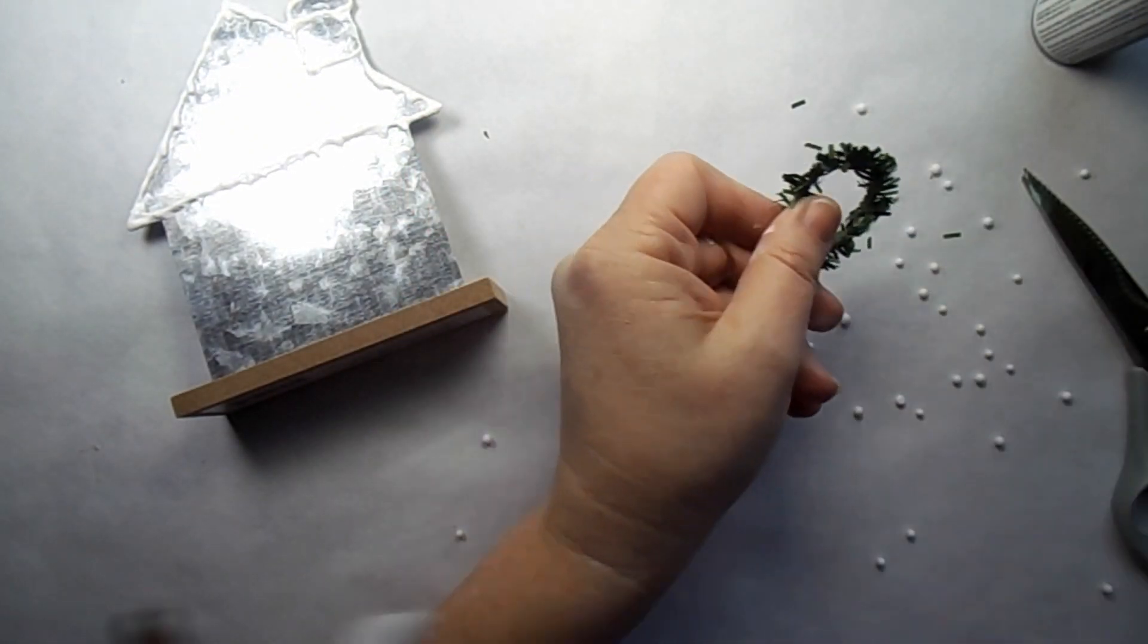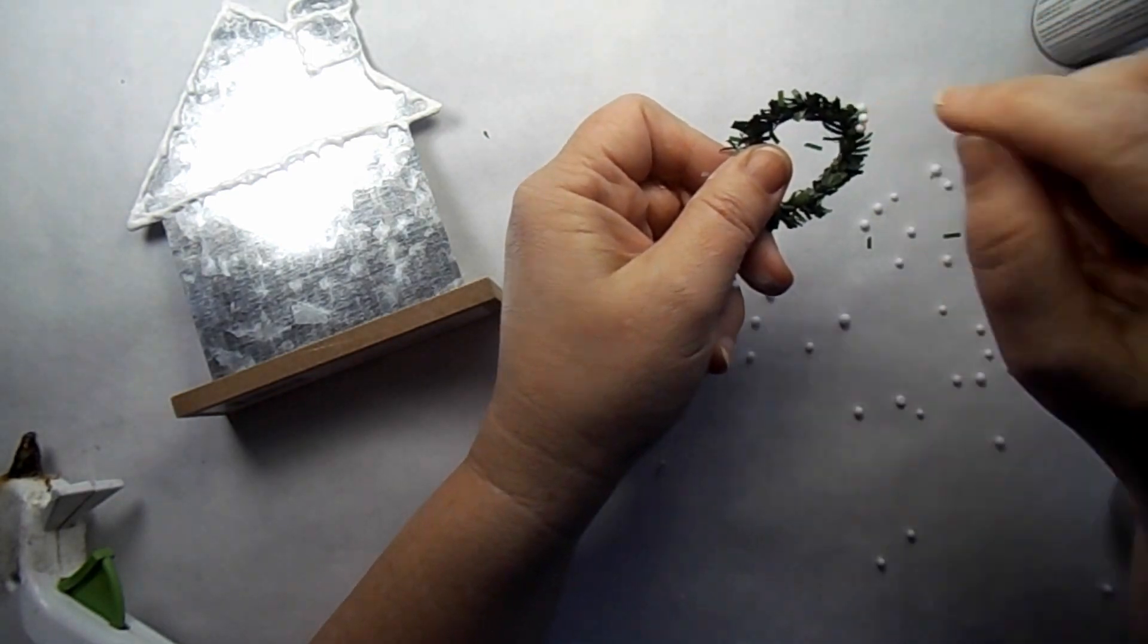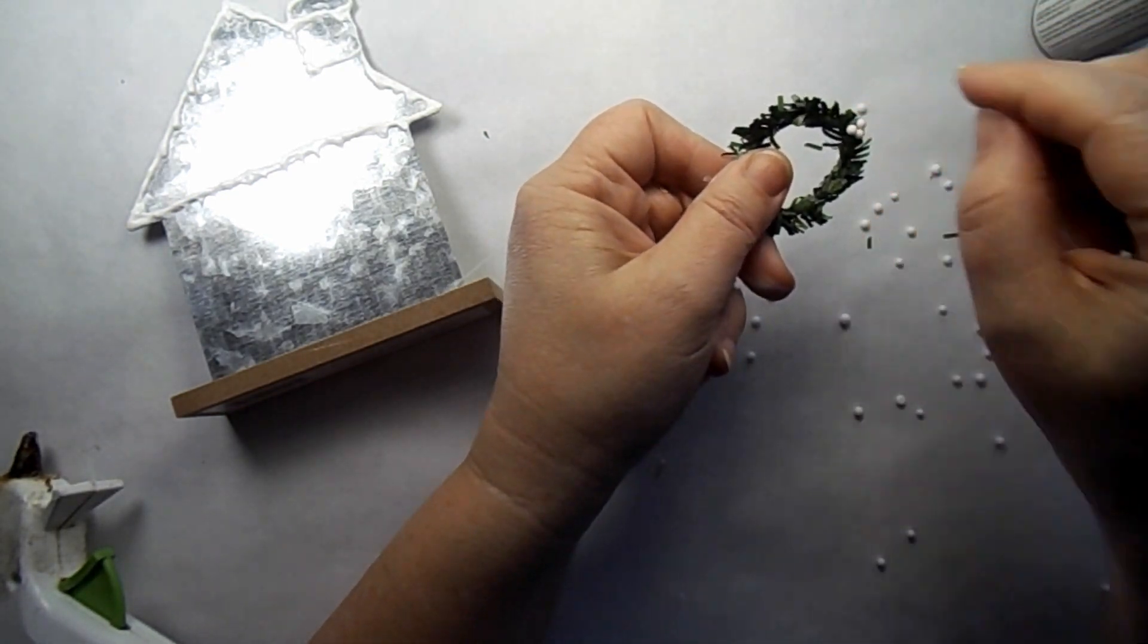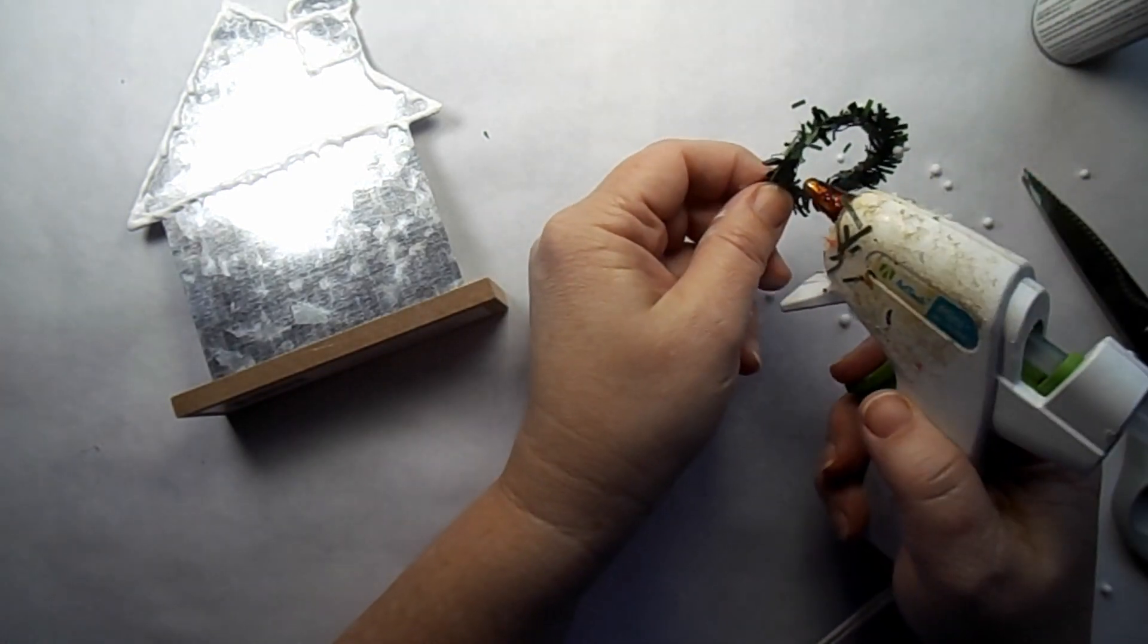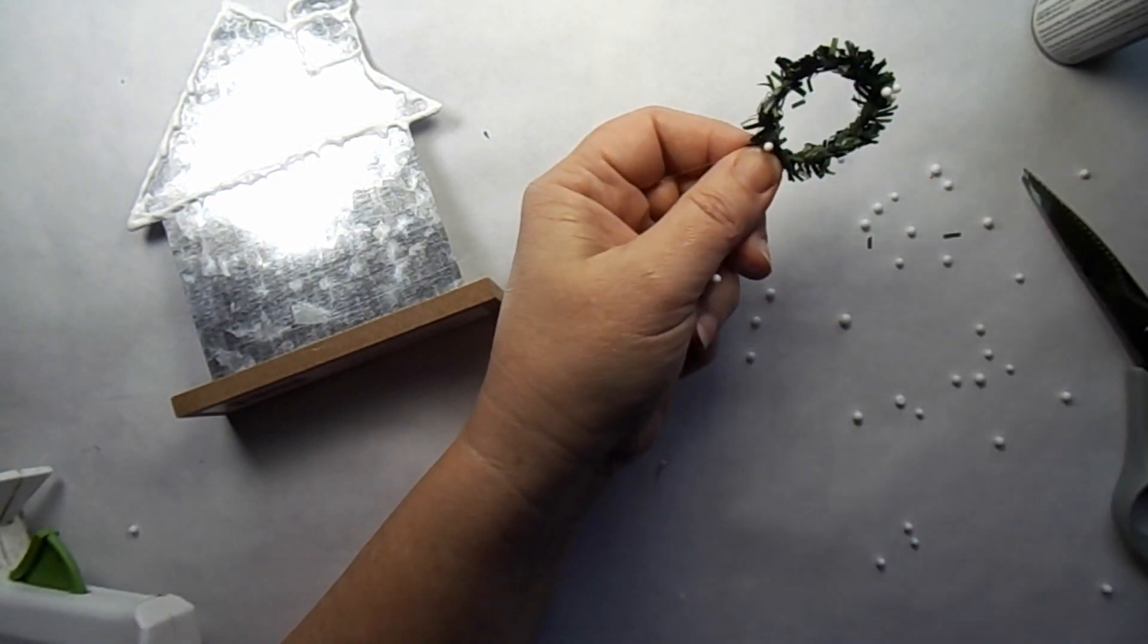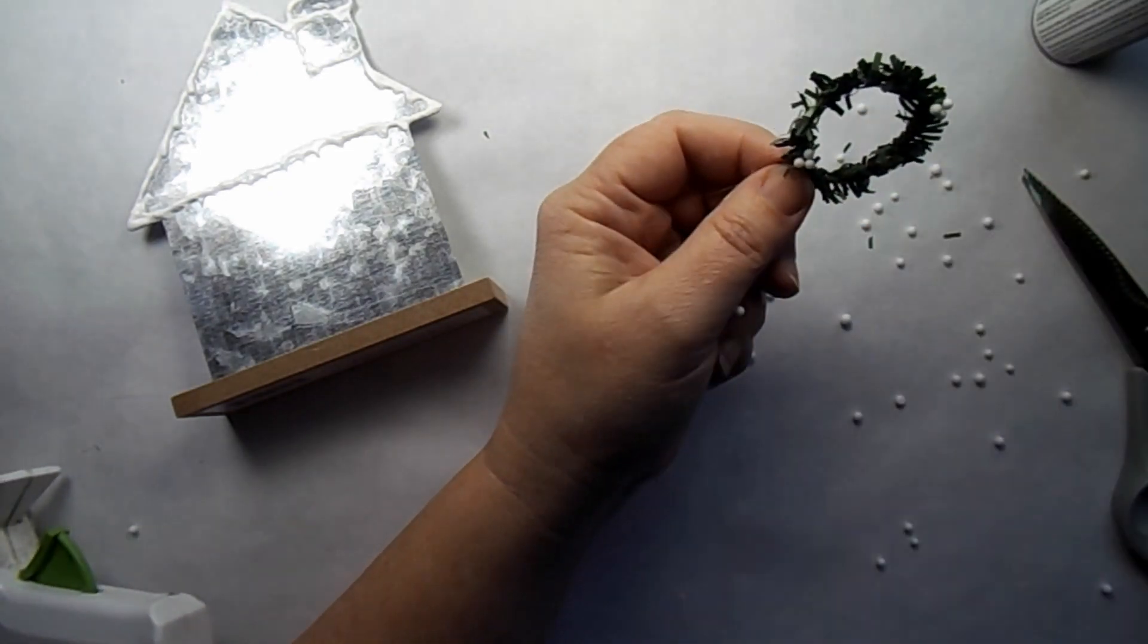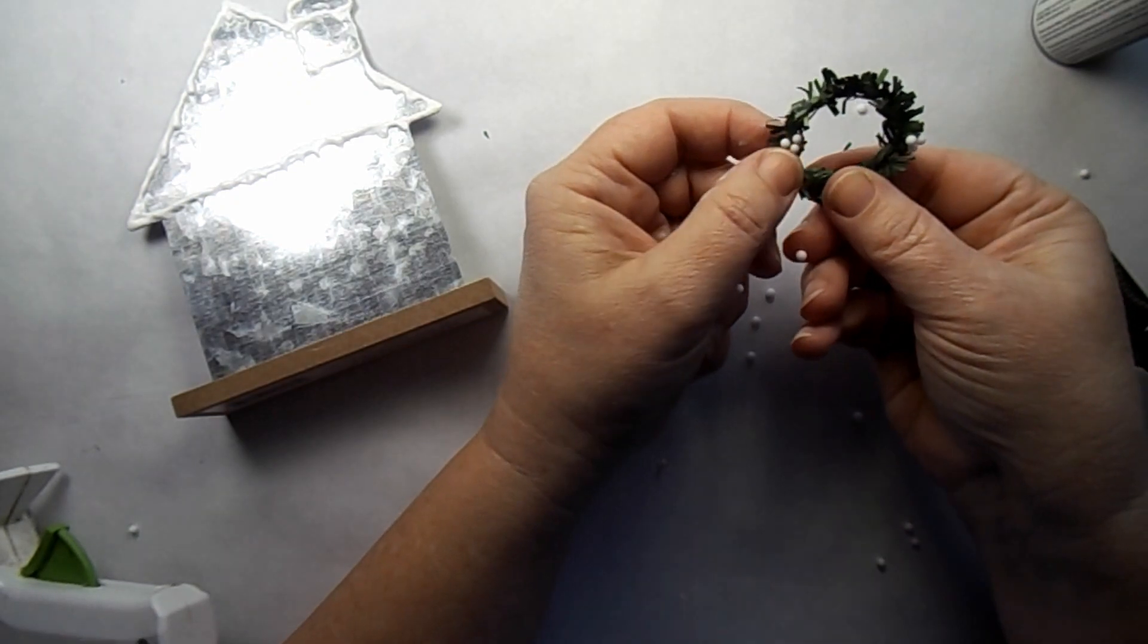There's that faux snow again. I'm using a little bit of hot glue and just putting three of these together to resemble some berries. I will do this on each side and then up at the top. Isn't that just cute and dainty? I think it's fun.